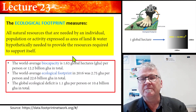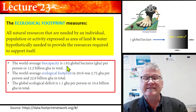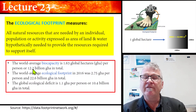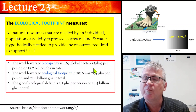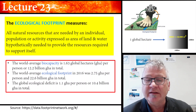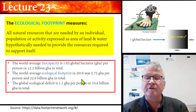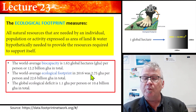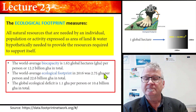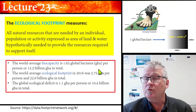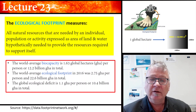You can do some statistics here. The world average biocapacity is 1.63 global hectares per person, or 12.2 billion global hectares in total — you can work out an average size that you need in terms of biocapacity. But the world average ecological footprint in 2016 was 2.75 global hectares per person. So it exceeded it — there is a deficit. We're using more than we have, but indeed it is very tricky to calculate these footprints.